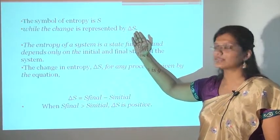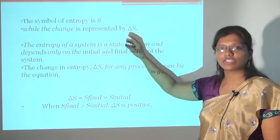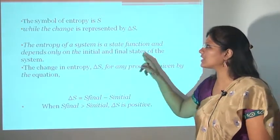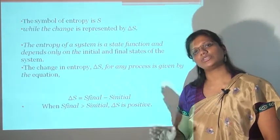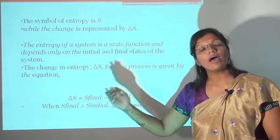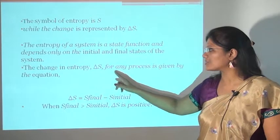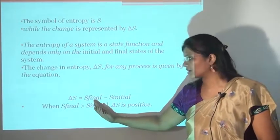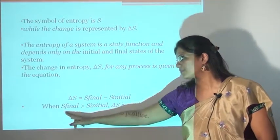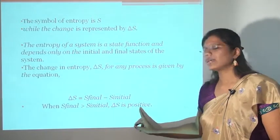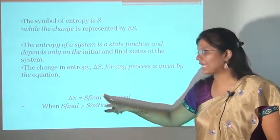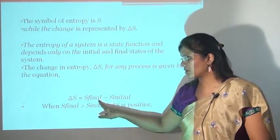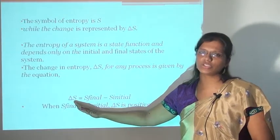The change in entropy delta S is represented by delta S = S_final − S_initial. The entropy of the system is a state function and depends only on the initial and final states. When S_final is greater than S_initial, delta S is positive. If S_initial is greater and S_final is less, then delta S, the change in entropy, will be negative.